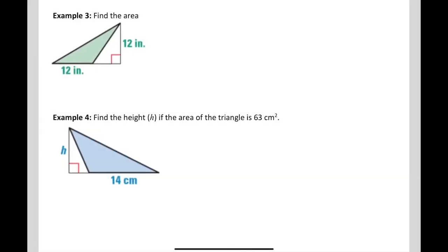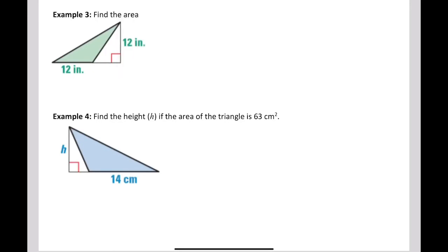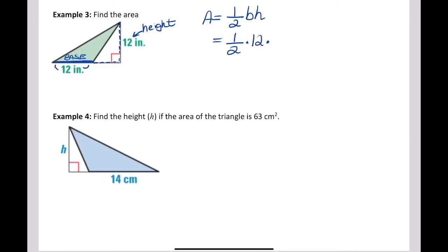This next example shows the height drawn as a segment outside of the triangle, and the base has been extended, but this is still the base. The base is 12 inches and the height is also 12 inches. Area equals one half times base times height — one half times 12 times 12. One half times 12 is 6, and 6 times 12 is 72. Area equals 72 square inches.